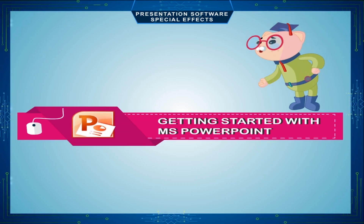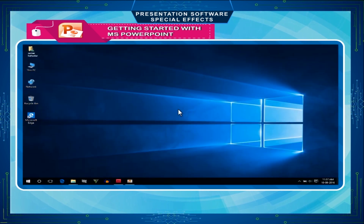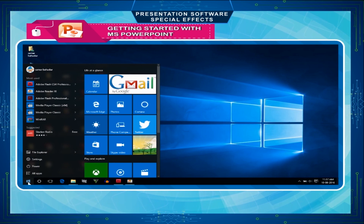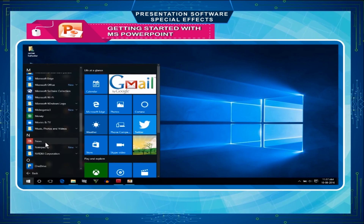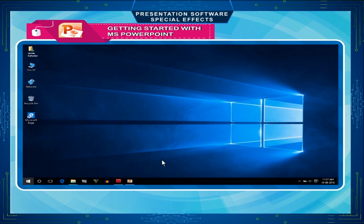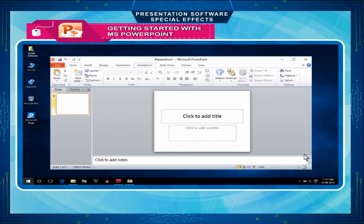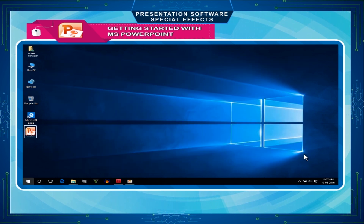Getting started with MS PowerPoint. Follow these steps to execute PowerPoint. Click on the Start button and then All Apps. Click on Microsoft Office, then click on Microsoft PowerPoint 2010. If you use PowerPoint regularly, it gets pinned on the Most Used category in the Start menu. You can click on it to open. If the MS PowerPoint icon is available on the desktop, simply double-click on it.